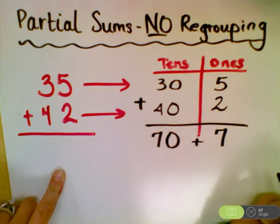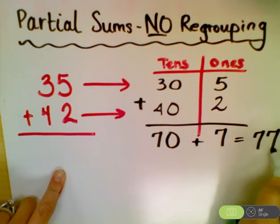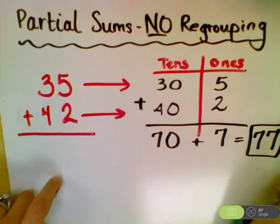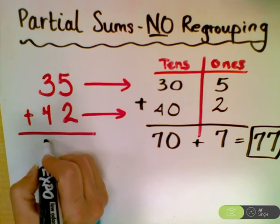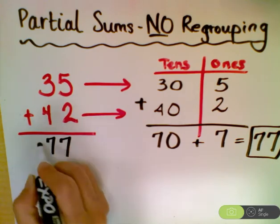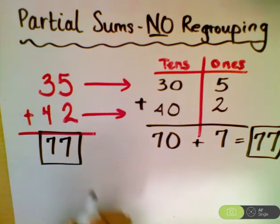And we add our two numbers together, 70 plus 7 equals 77. And we box in our answers. And don't forget to go ahead and write in your final answer over here and box it or circle.